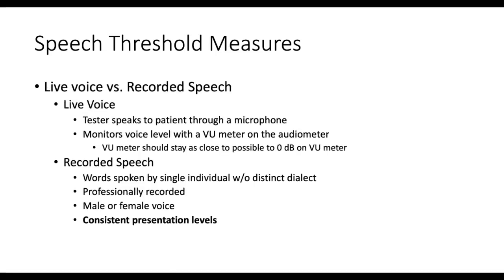Live voice is most common because it's quicker. You have to monitor your voice to as close to zero dB on the VU meter. If you're presenting at 50 dB and the VU meter spikes above zero — like plus five or plus ten — then you're not presenting at the level you think you are. Recorded speech gives consistent presentation levels and controls for variation between male and female voices, since different examiners can produce different results.